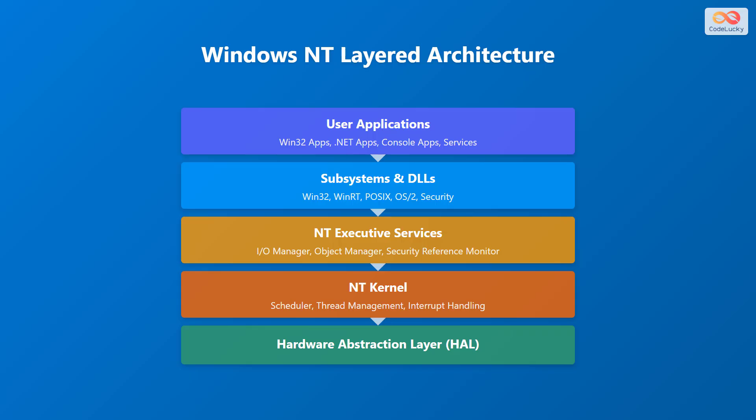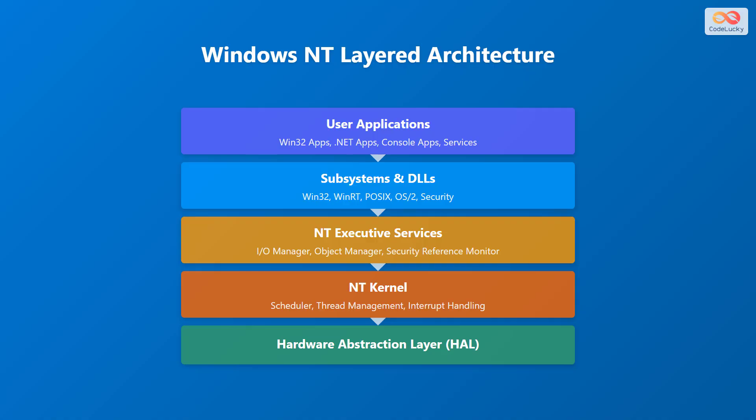Below this is the NT Executive Services layer, which includes the Input-Output Manager, Object Manager, and Security Reference Monitor. The next layer is the NT kernel, responsible for scheduling, thread management, and interrupt handling. Finally, at the base is the Hardware Abstraction Layer, or HAL. These layers work together to provide a robust and versatile operating system environment.